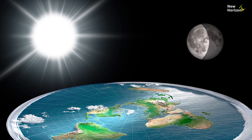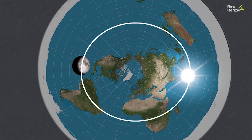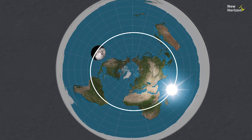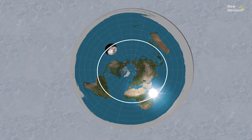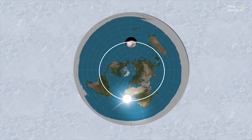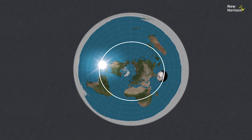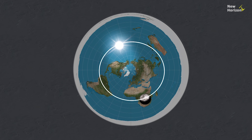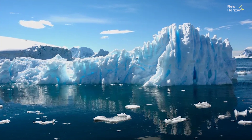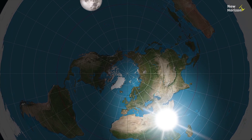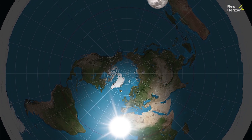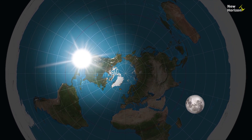Flat earthers believe that the Sun and moon are local and move in a circle above the Earth. If the Sun and moon move like this, it would make sense that their light couldn't reach the land beyond Antarctica, meaning that land would be in permanent darkness. If there is indeed land beyond Antarctica, the Creator should not have confined the Sun and moon to the known land.